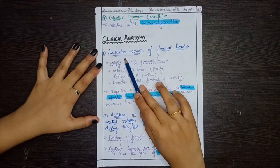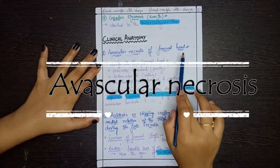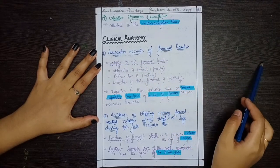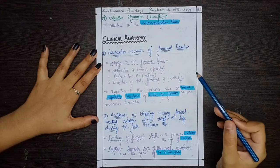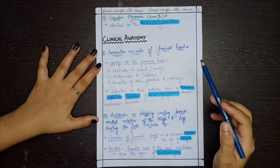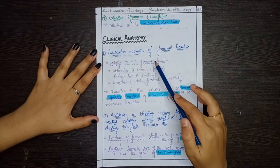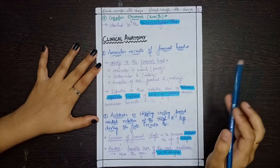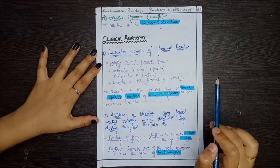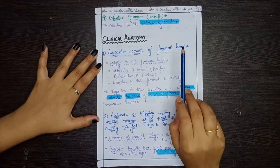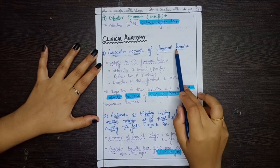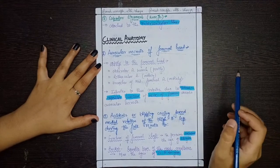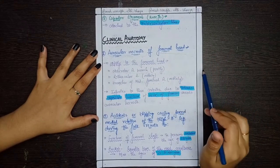The first condition is avascular necrosis of the femoral head. Avascular necrosis is the damage of the femur bone or any bone due to a decrease in blood supply to that area. In the femoral head, due to decreased blood supply, there is avascular necrosis — that is, damage to the femoral head.